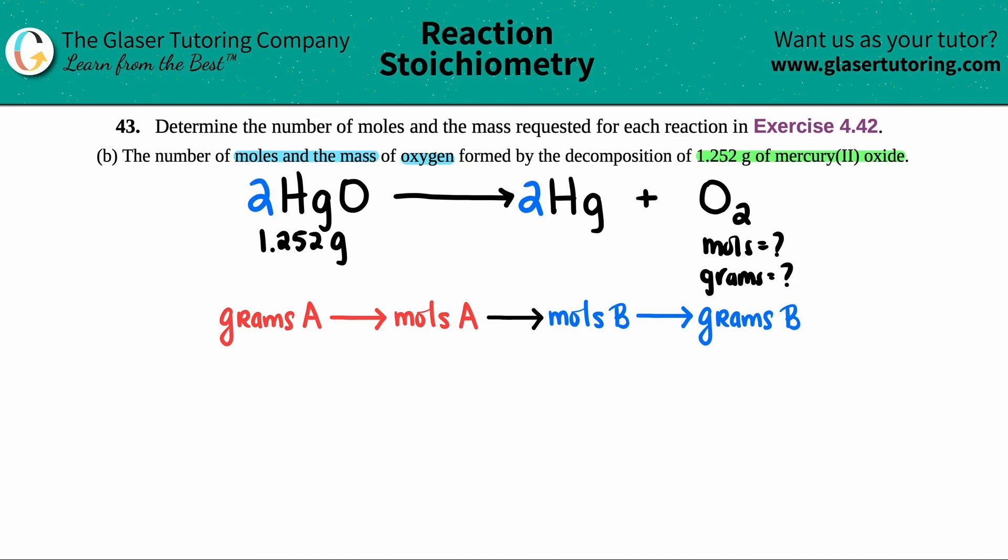1.252 grams of HgO. Well, I want to get to grams or even moles of the other guy. So I want to get to moles of O2. And then from there, it looks like I can convert into grams of O2. But what's the first thing that I need? I need to find out how many moles of mercury two oxide I have. But now the question is, how do I do that? We actually know how to do that one already. We've done tons of problems like that.